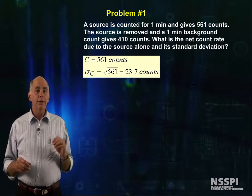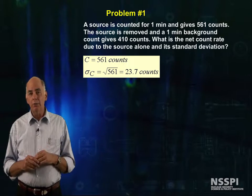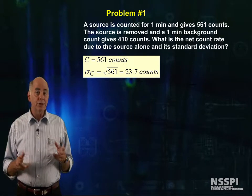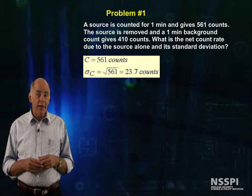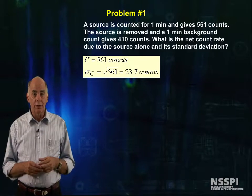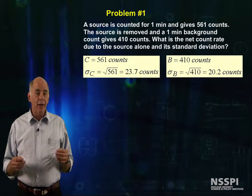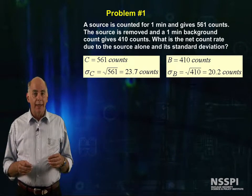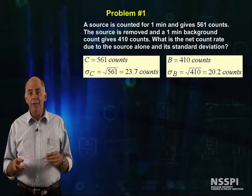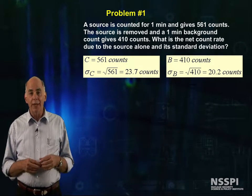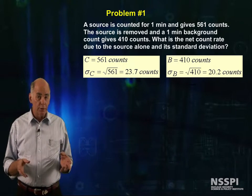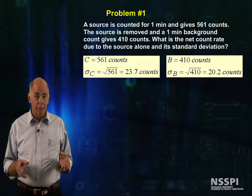We know that the source plus the background is equal to 561 counts. We know that the standard deviation of this count is the square root of this, or 23.7 counts. We know that the background count is 410 and that the standard deviation of this count is the square root of this, or 20.2 counts.